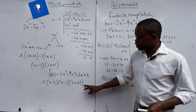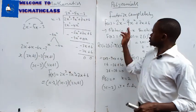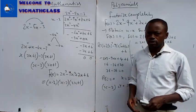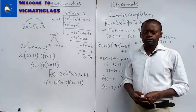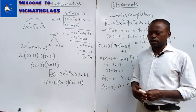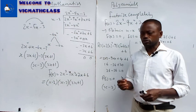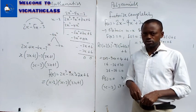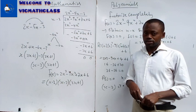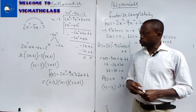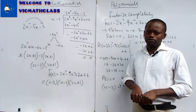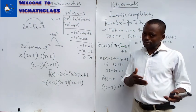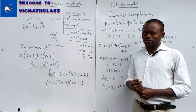We have been able to factorize this polynomial into three factors. If you are looking for the roots, just equate each factor to zero to obtain them. I believe this explanation is very helpful. We are still bringing more illustrations and examples, so please click the subscription button and the notification bell so you get notified when we upload. Please like, share, and subscribe to our channel. Thank you so much.